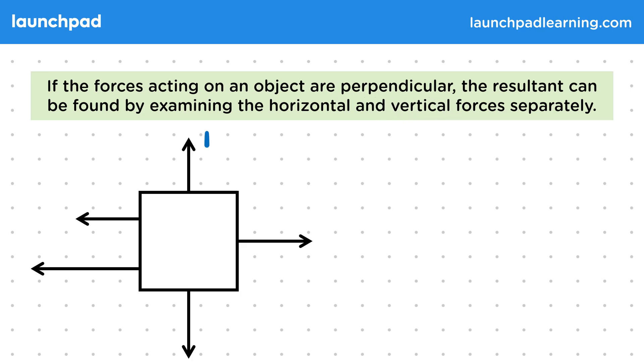In this diagram, the arrows represent each of the forces acting on the box and a force is a vector quantity shown by the arrows. We can then find the resultant force in the horizontal and vertical directions separately.